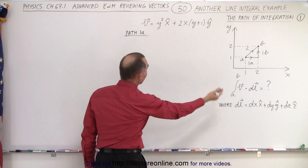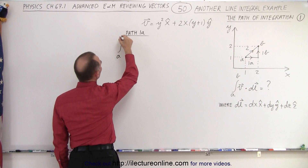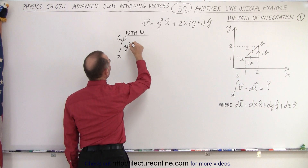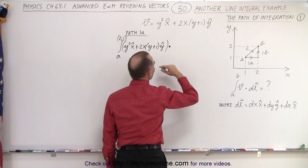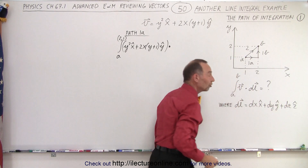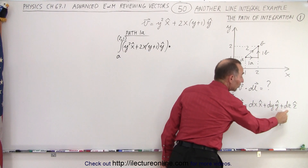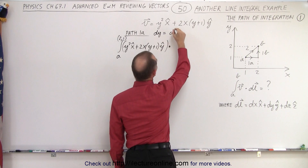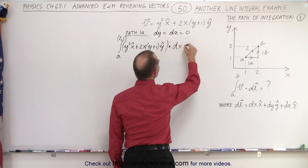We need to write in what those vectors are. We have the integral from A to the point (2,1). The vector has y² in the x-direction plus (2xy + 1) in the y-direction, and we take the dot product with dl. Now dl is defined as a small displacement dx in the x-direction, plus dy in the y-direction, plus dz in the z-direction. But along path 1a, we're only traveling in the x-direction, so dy = dz = 0. Those two components drop off, leaving only dx in the x-direction.